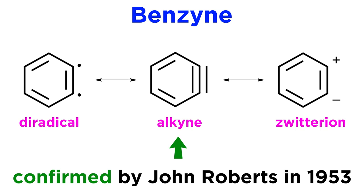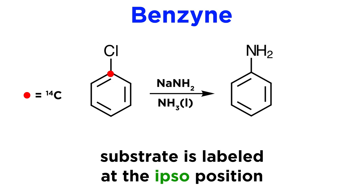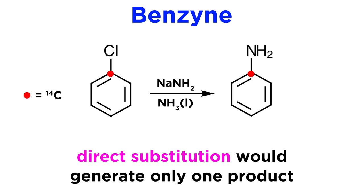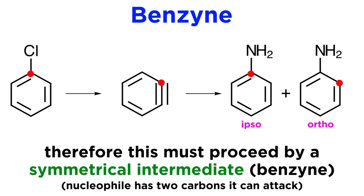The nature of this intermediate was confirmed by American chemist John Roberts in 1953. Interested in demonstrating that this type of substitution went through a benzyne intermediate rather than direct substitution, he did some experiments utilizing isotopic labeling. Starting with chlorobenzene labeled with C14 at the ipso position — the carbon that bears the chlorine atom — a substitution was carried out with sodamide. If substitution was direct, we would expect only one product, but instead a mixture was produced, with fifty percent of the resulting aniline labeled with C14 at the ipso position and fifty percent at the vicinal or ortho position. This demonstrates that there must be a symmetrical intermediate, and that is the benzyne.